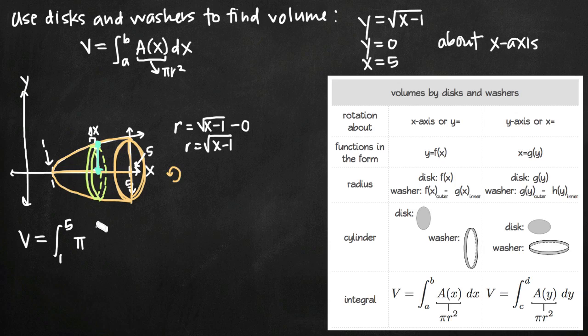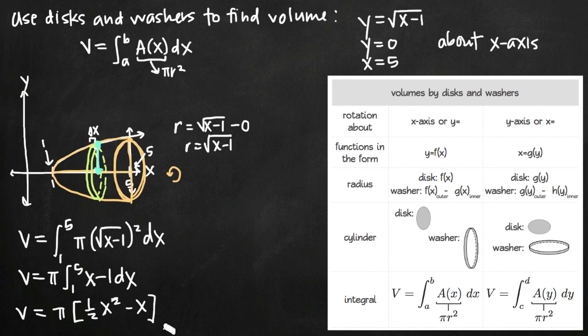And then we have pi times our radius, square root of x minus 1, squared dx. And now we just need to solve this integral. So we'll get volume equals, we'll pull pi out in front because it's a constant coefficient, square root of x minus 1 squared takes away the square root sign and we just get x minus 1 dx. Now we'll take the integral and we'll get pi times 1 half x squared minus x, and we'll evaluate that on the interval 1 to 5.